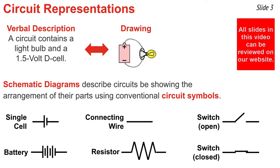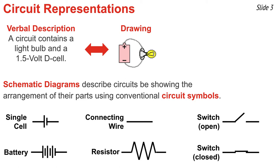If I were to take these circuit symbols and use them to represent the verbal description and drawing above, I would need to use a single cell and a resistor symbol and then some lines to connect them as connecting wires, and the result would look like this.